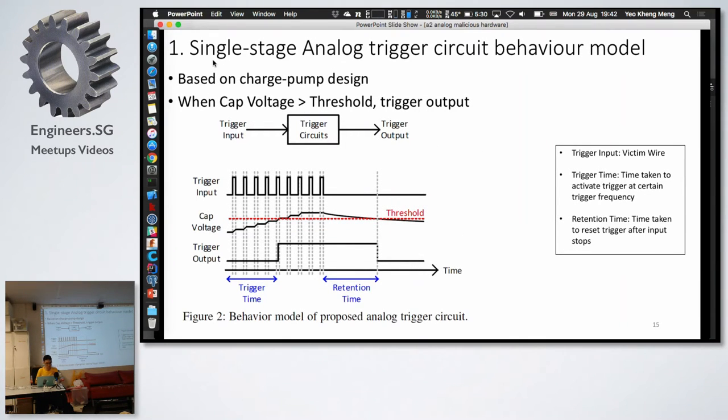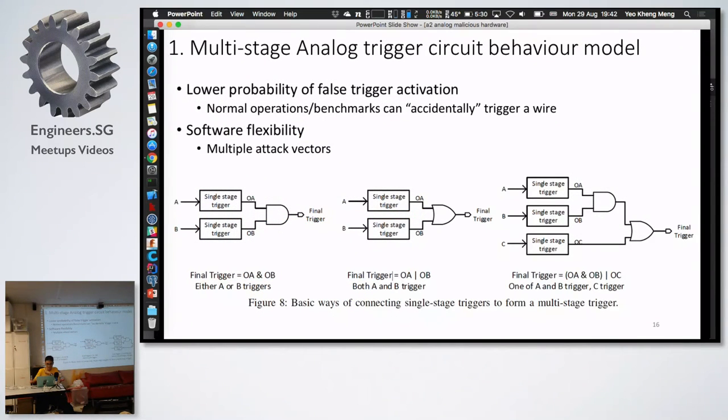For step number one, they call the single stage analog trigger. This is based on the charge pump design. This is the trigger input here. The trigger input can be thought of as something like a clock signal. When you keep on triggering this, the capacitor will slowly build up its voltage. Once it crosses a certain threshold, then it will trigger the output. This is for a single stage. In the single stage design, the paper said that it's actually very easy to get a false positive. Because of this analog signal, it may accidentally trigger when you do one or two. That's why they suggested that they implemented a multi-stage trigger. Basically, more than one triggers before they actually trigger the final trigger here. By having two, you lower the probability of a false positive. Then you can have multiple attack battles. Instead of just going through that one particular wire.